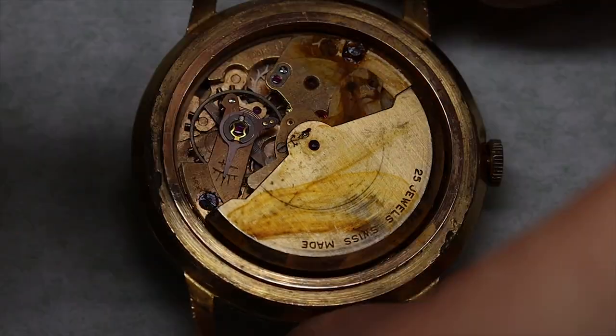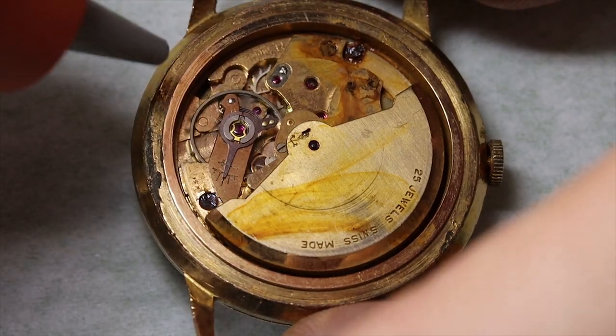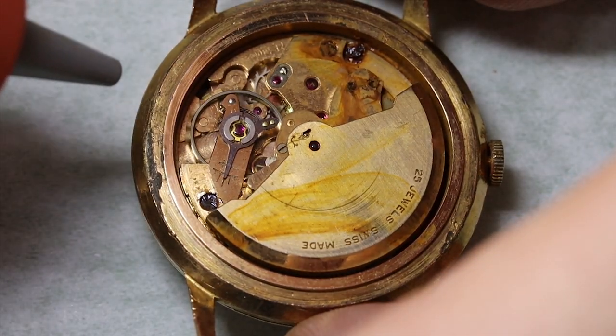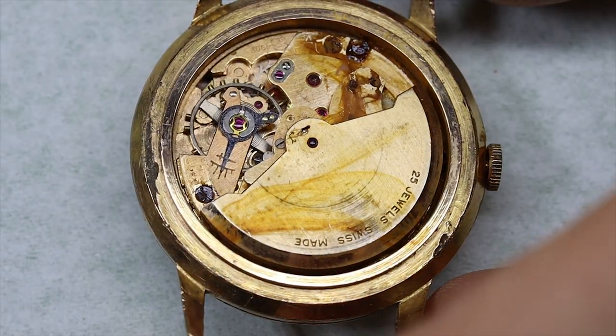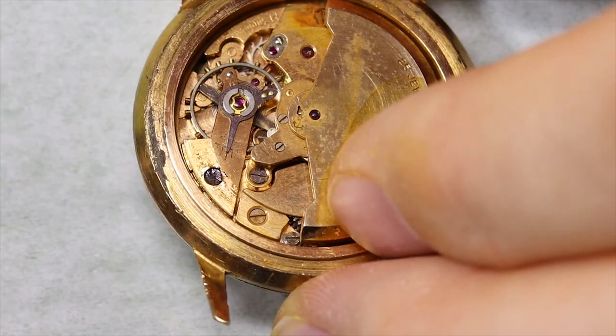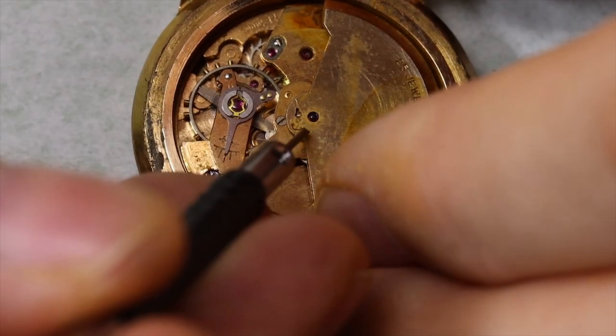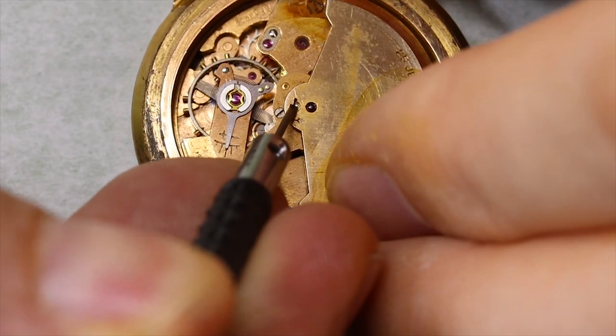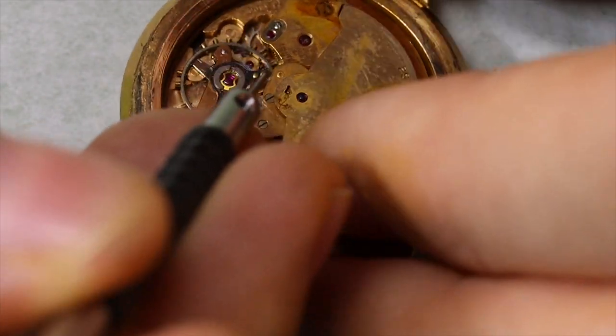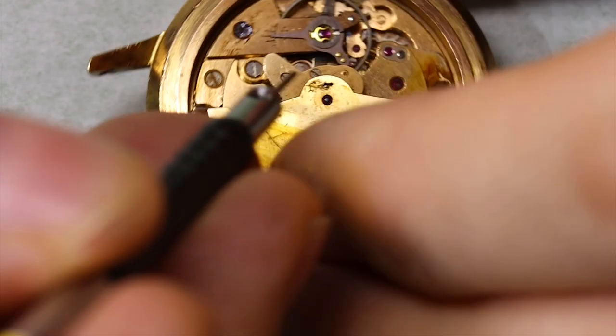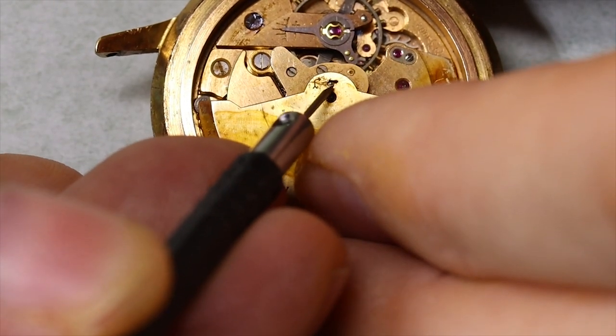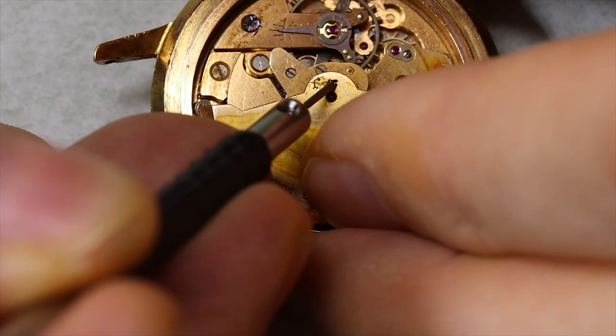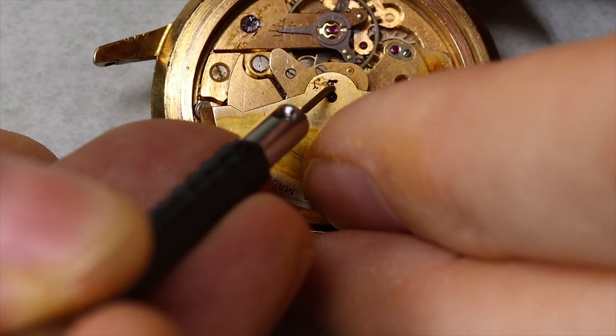The question is really what can we do about this. Now the most important thing when you get a watch like this is the balance. If the balance actually does run, does oscillate properly, then that's a really good sign. It might mean it's possible to do something about the watch. The other question is how deep the rust goes.